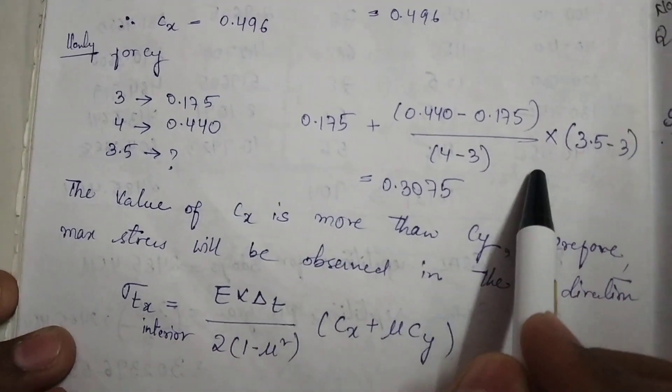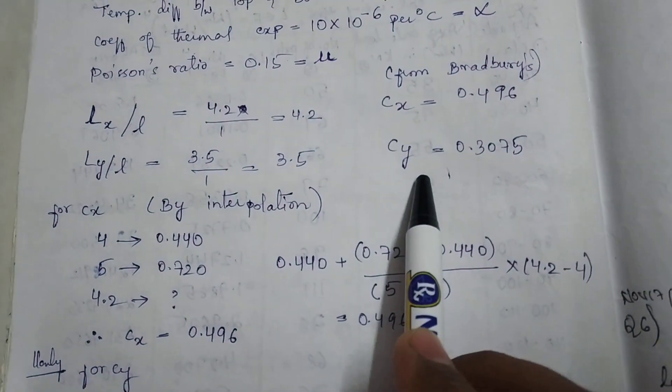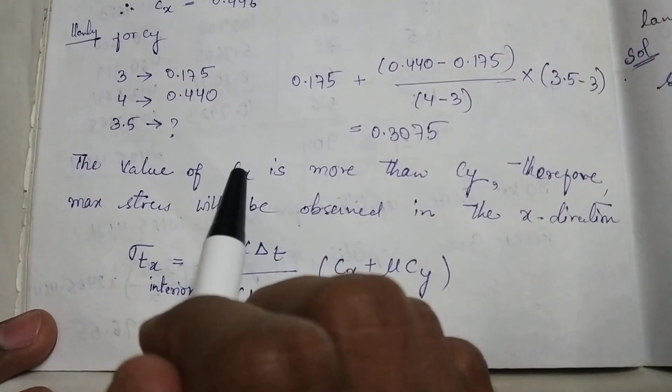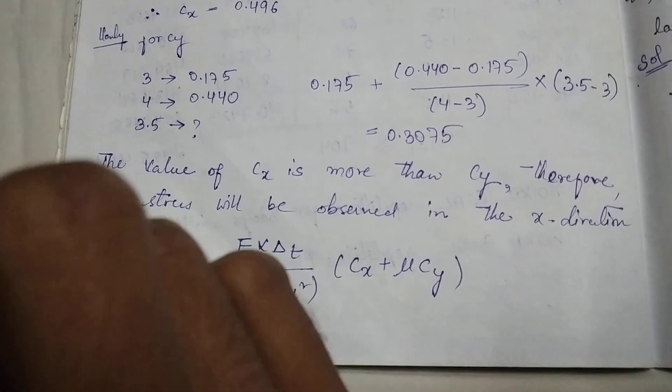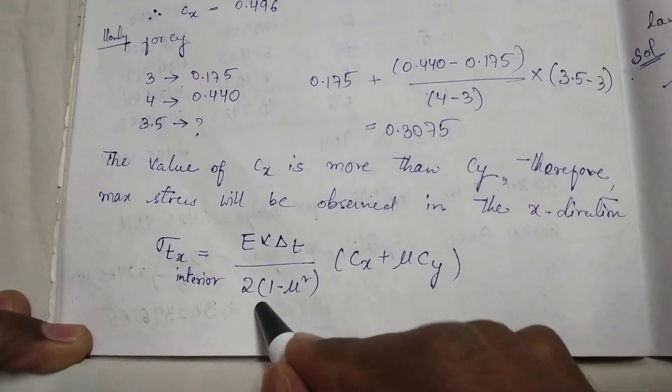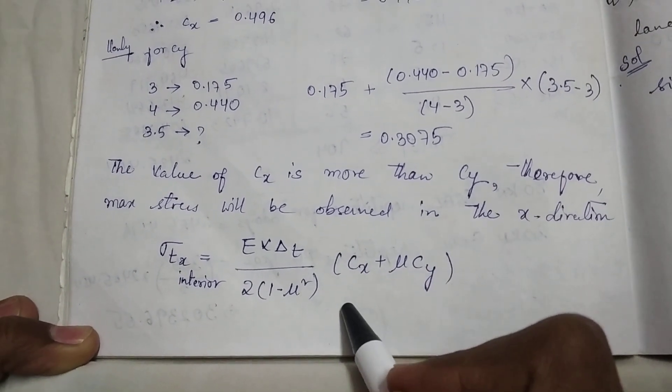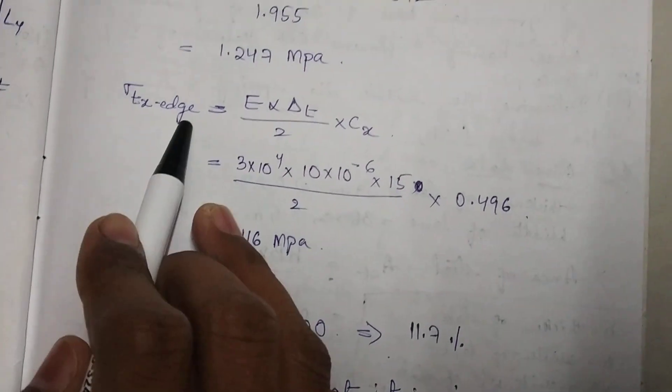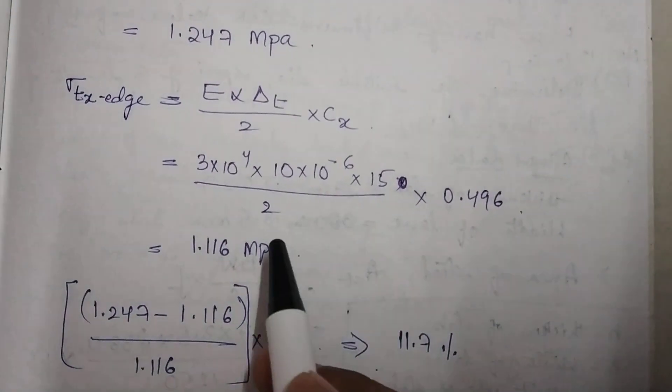We have obtained values for both Cx and Cy. Now, according to Bradbury's equations - which include one for stresses at the interior and one for stresses at the edge - we substitute all our calculated values and constants. This gives us the stress at the interior. Similarly, we calculate the stress at the edge using the corresponding formula.